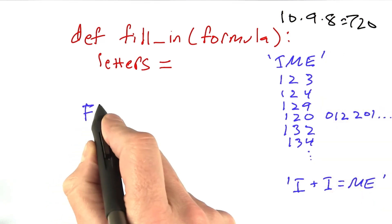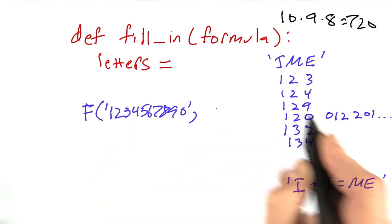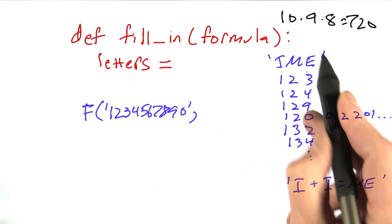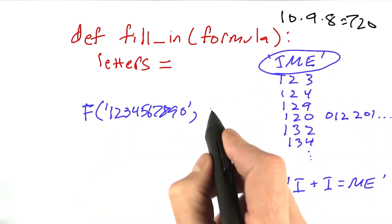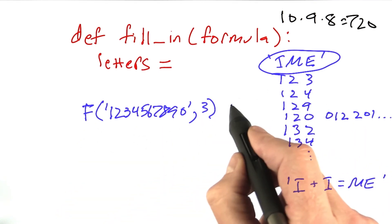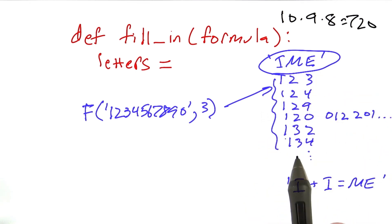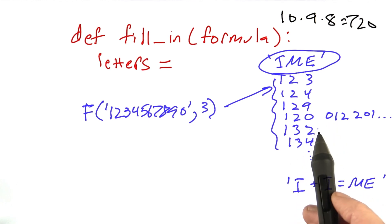So we want some function f. We give it the list of digits, and we give it the number that we want, and there are 3 letters in this particular formula, so we want 3 of them. What function f takes that and then returns this sequence of all possible sets of numbers? And maybe it returns it as a tuple or a list or whatever.